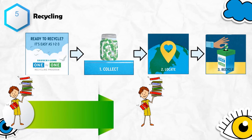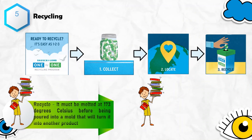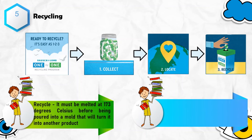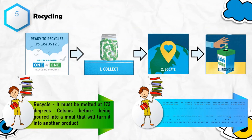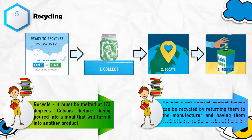In order to recycle these products, they must be melted at 173 degrees Celsius before being poured into a mold to turn it into another product. Unused contact lenses that have not expired can be recycled by returning them to the manufacturer and letting them redistribute it.